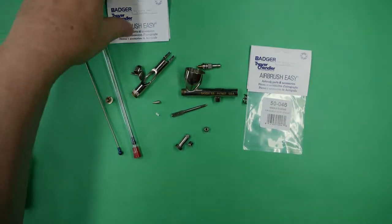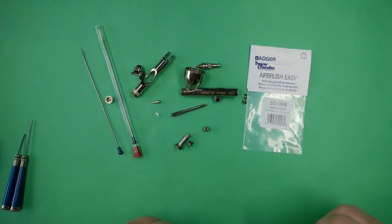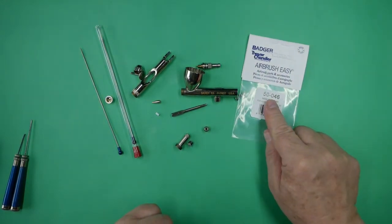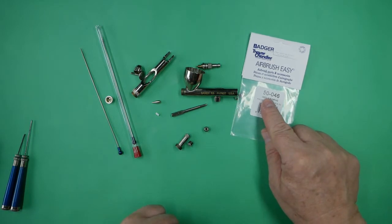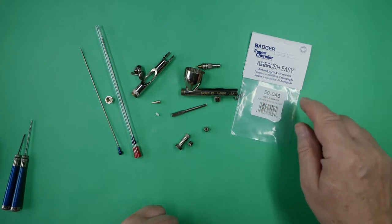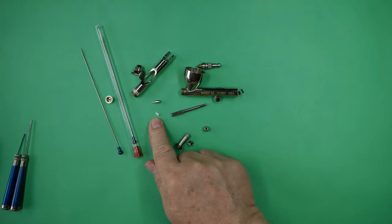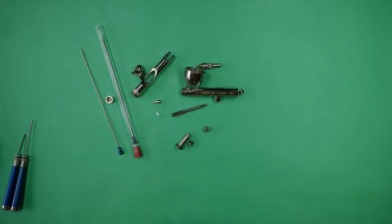And the customer mentioned that it may need a new needle bearing, which is this part here. And the part number for the needle bearing is 50-046. And this is the actual needle bearing which is a new one, as we've discovered there is no needle bearing in the airbrush.